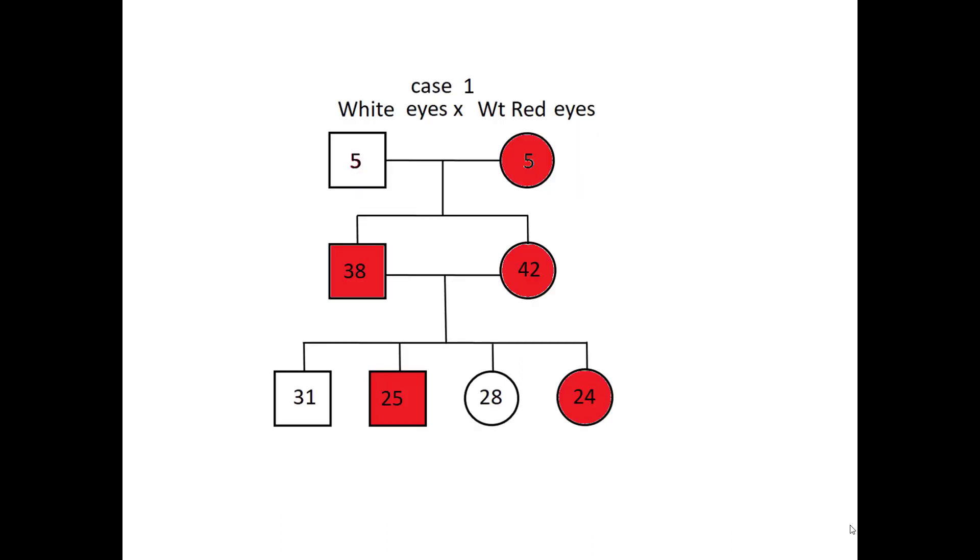So for this example, we bred fruit flies, red-eyed wild type fruit flies with white-eyed fruit flies. And I've written down a pedigree chart with our results and showed the numbers of offspring that we got in the F1 and F2 generations.